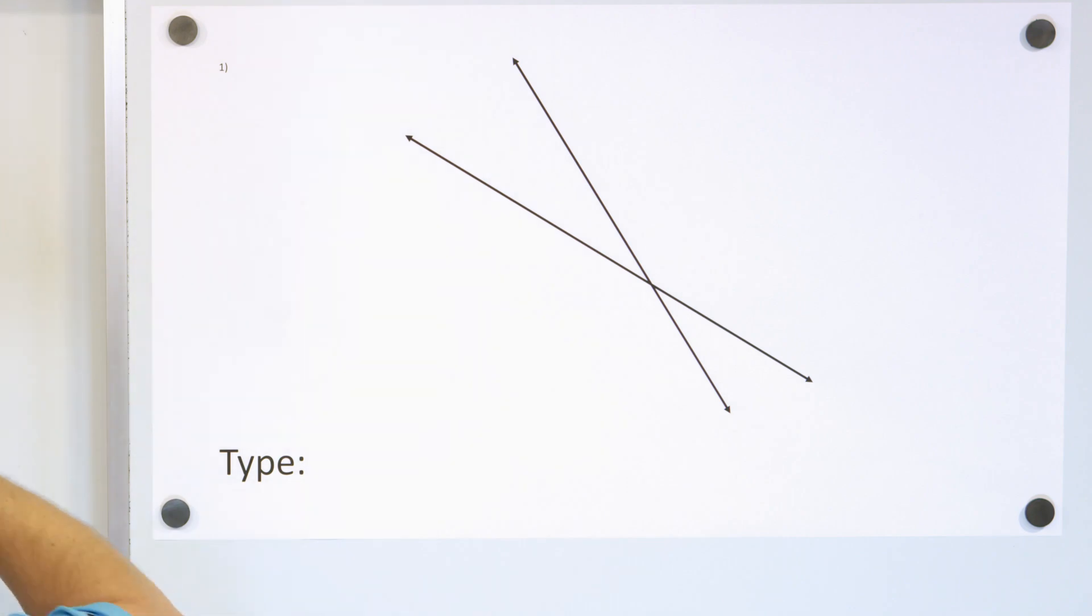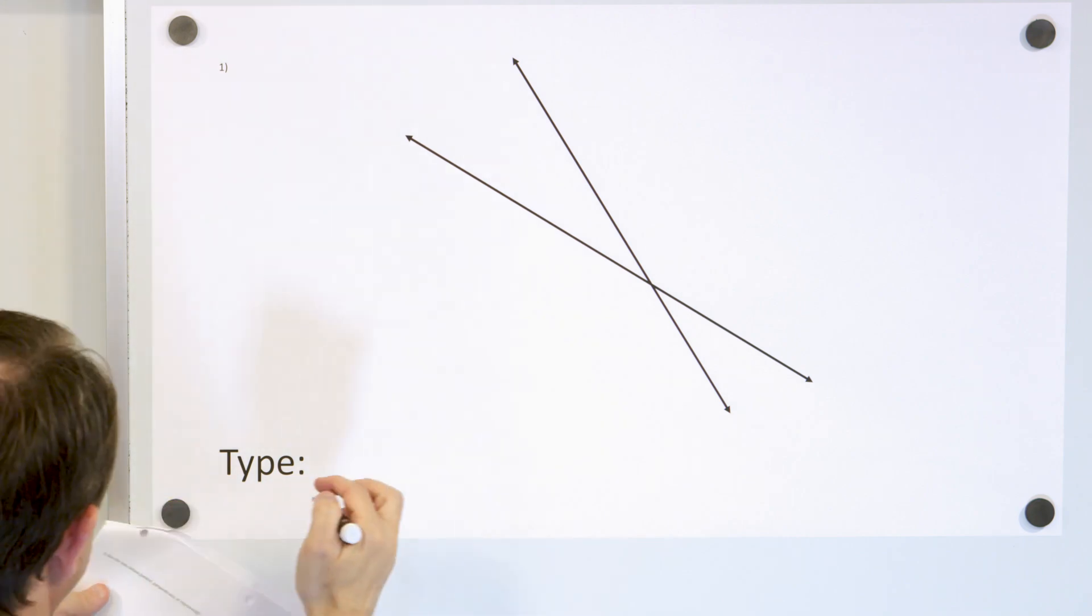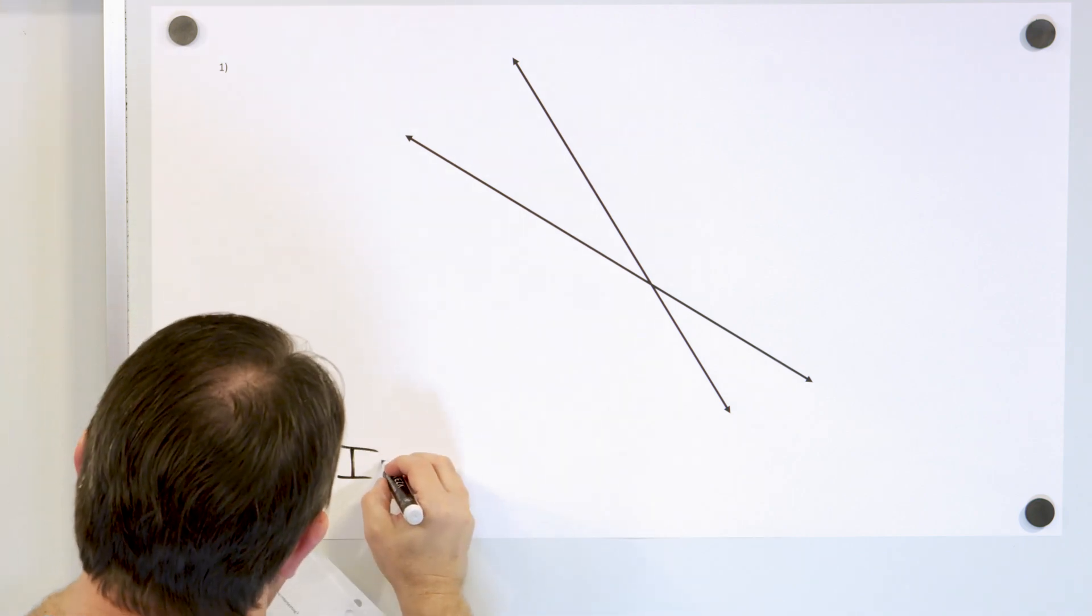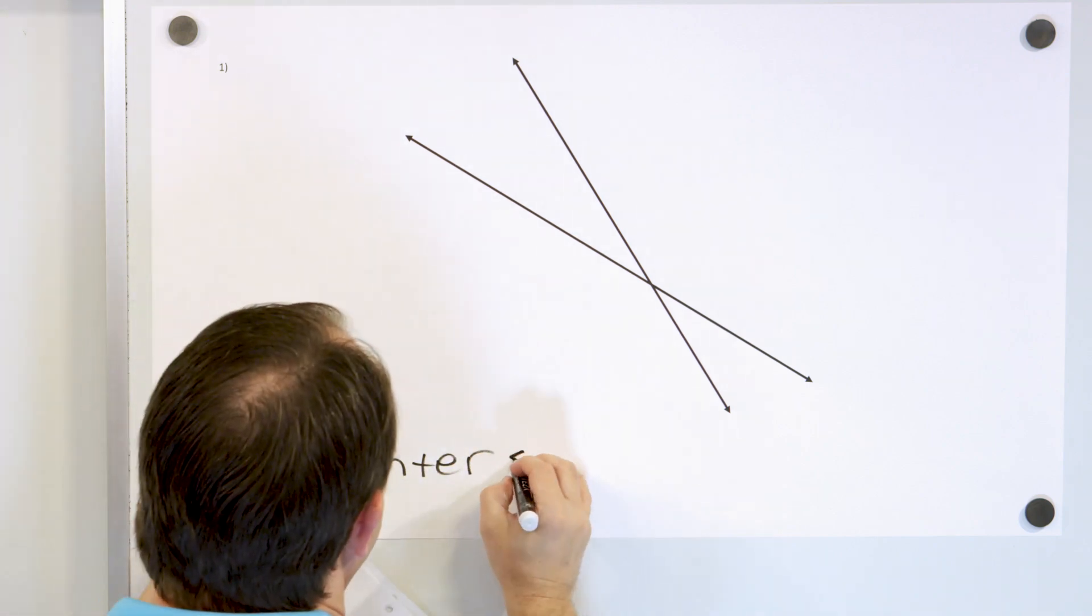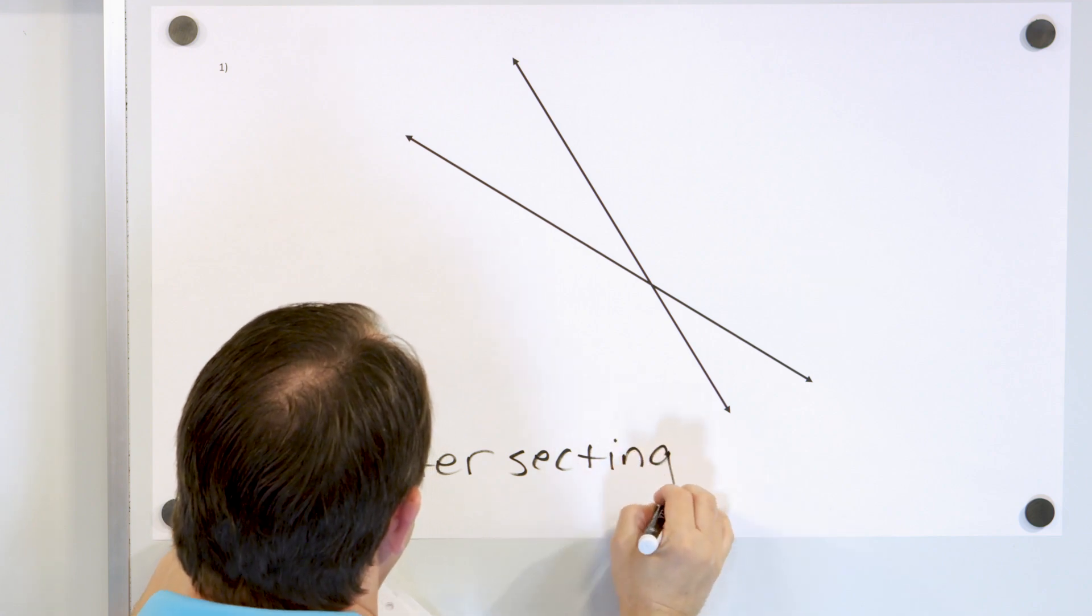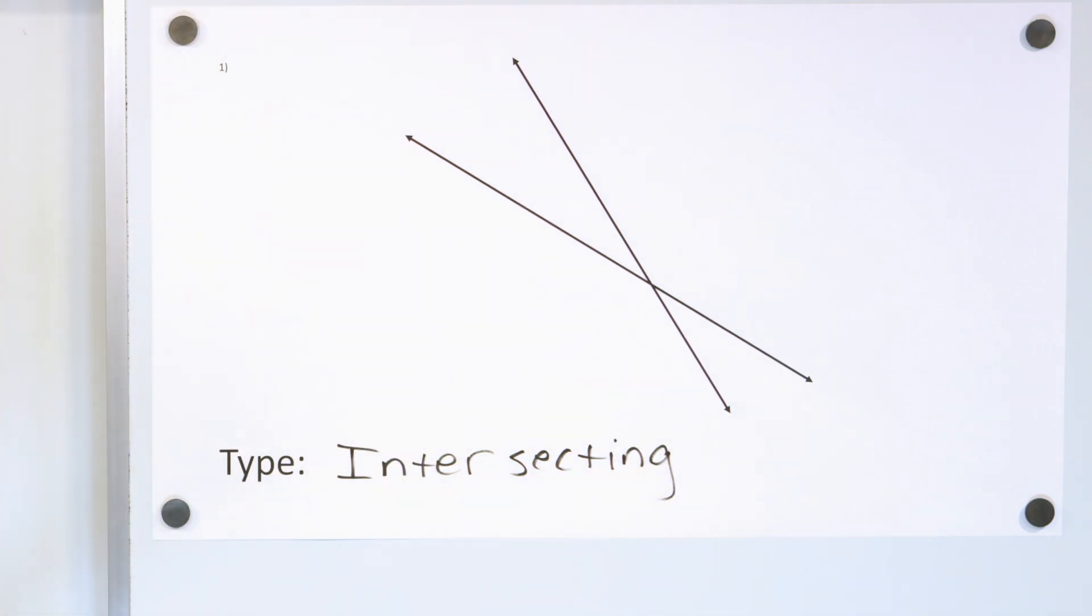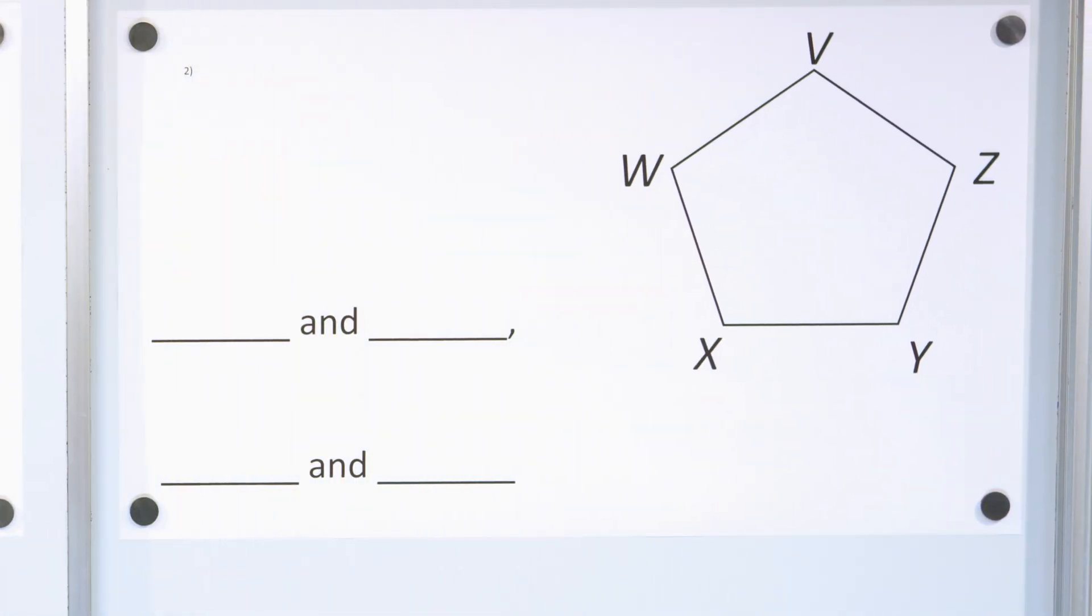So we're going to call that intersecting lines. Or you could just say these lines intersect, all right? Next problem.